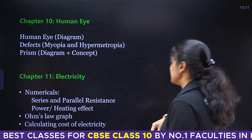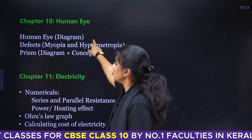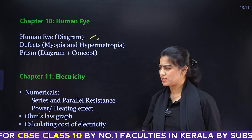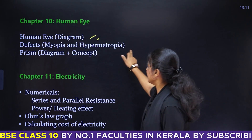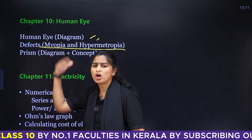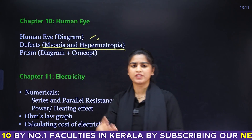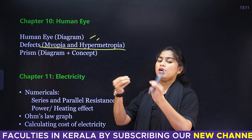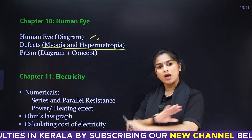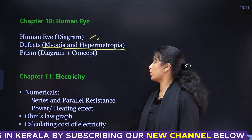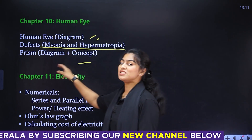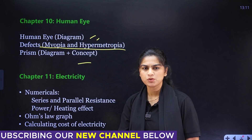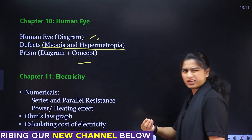The next chapter covers the Human Eye. The human eye diagram is one from which most questions come. Defects like Myopia and Hypermetropia and their corrections are pretty very important. The diagrams and concepts of these defects are repeated in exams.